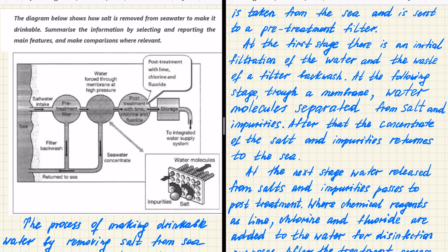At the following stage, through a membrane, water molecules separated from salt and impurities. Here we are describing about what exactly happening within this membrane process. Basically, this is the second process. And after that, the concentrate of the salts and impurities returned to the sea. And you can see from here, they were returned from the first stage, they were returned from second stage as well.